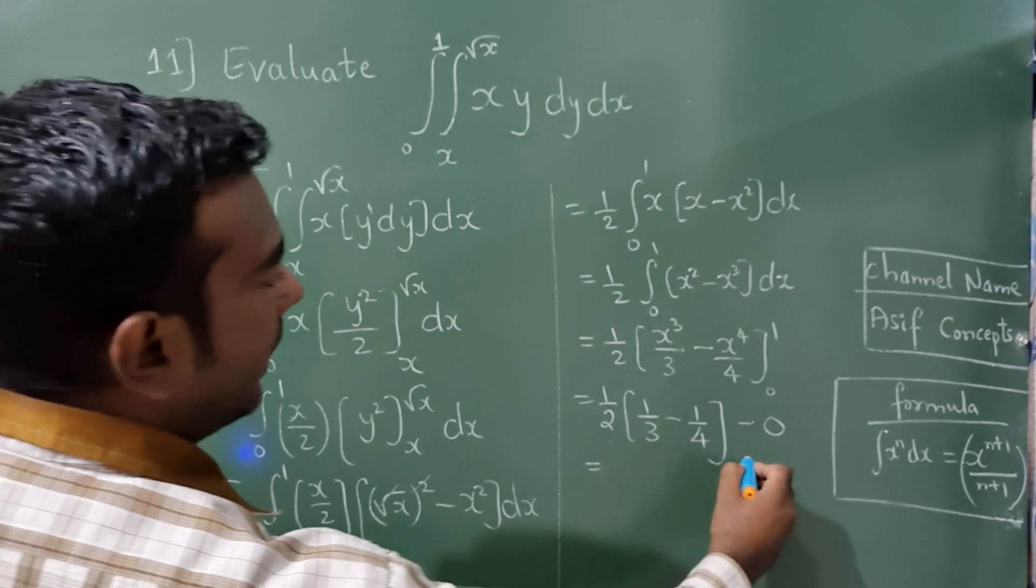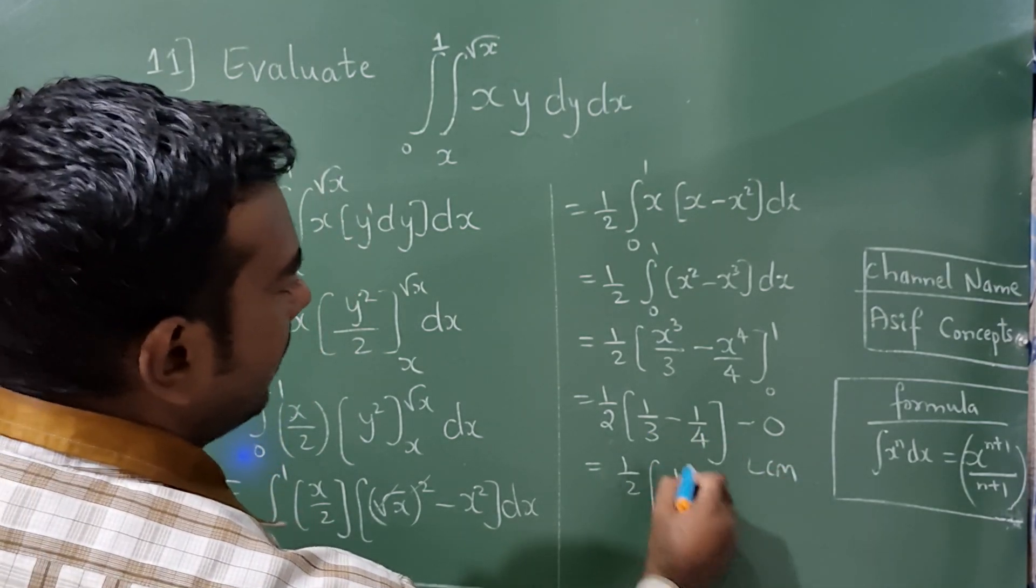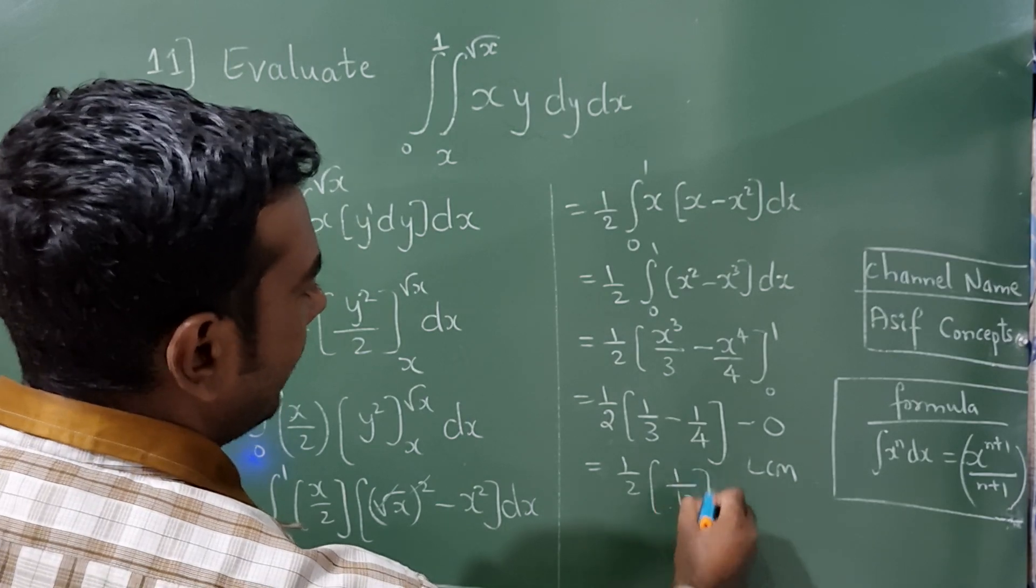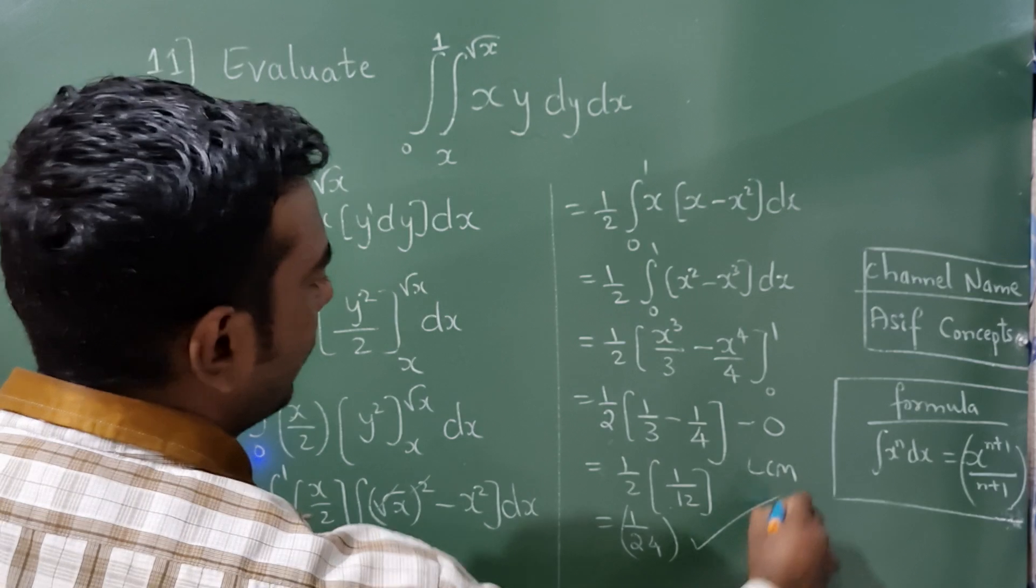Now take LCM for this. 1 by 2, 4 minus 3 is 1, 4 times 3 is 12, 12 times 2 is 24. So the final answer is 1 by 24.